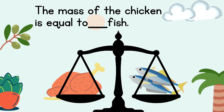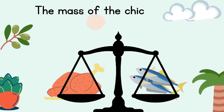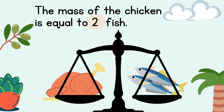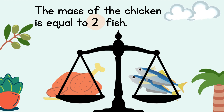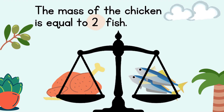Next, we have a chicken and fish. Can you tell how many fish is equal to the weight of the chicken? Let's check — the mass of the chicken is equal to two fish. Let's read the answer together: the mass of the chicken is equal to two fish. Well done.